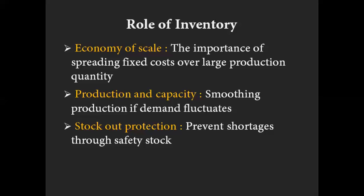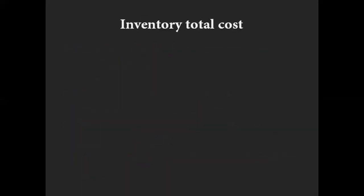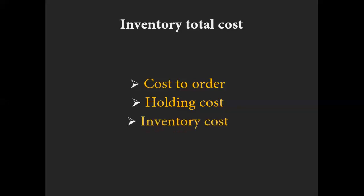The last reason we use inventory is price speculation: if we observe that the price of items we intend to buy is going to go up, we buy more now to prevent higher costs later. All of these usages of inventory come with a cost, and there are three main components to what we call the annual inventory total cost. The first is the cost to order — every time we place an order there is a cost associated with it. The second is the cost of holding inventory, which includes building the warehouse, paying people to move and store materials, buying forklifts, paying insurance, and so on. The last is how much the inventory itself costs.